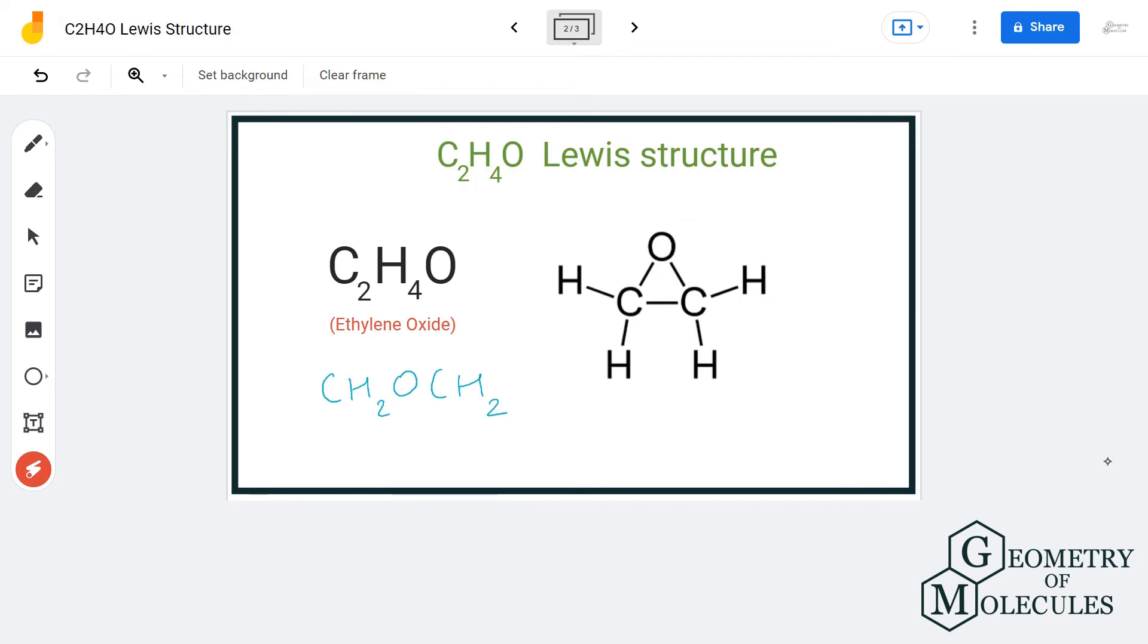Now there are other ways to present this compound as well. If you are looking at its aldehyde isomer, only one carbon atom will form a bond with the oxygen atom, but that will be for another video. For now, this is the Lewis structure for ethylene oxide in which both these carbon atoms form a bond with the oxygen atom.